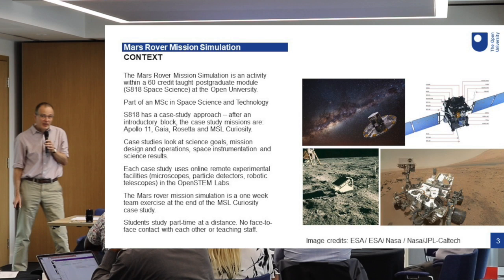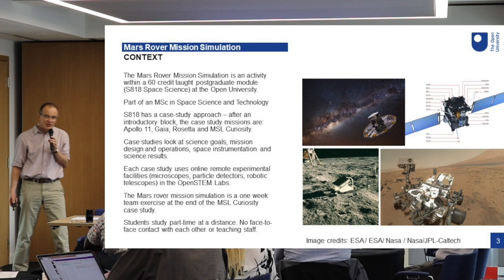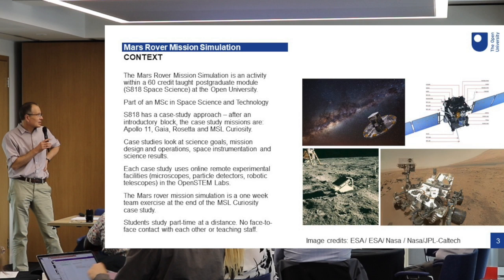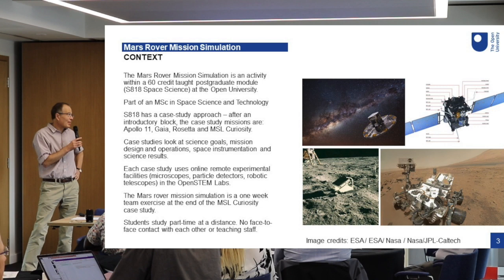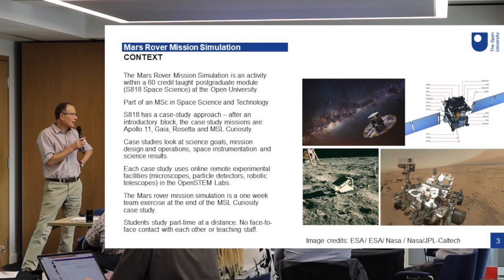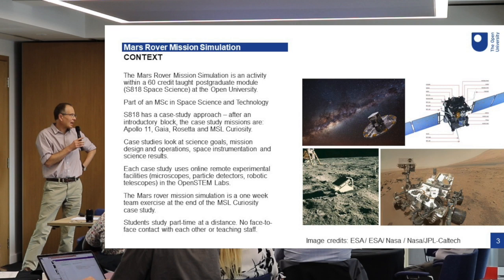Let me give you some context about why we run this activity. We have a 60 credit module on space science, which is part of an MSC in Space Science and Technology. One of the interesting things about S818, this space science module, is that it has a case study approach with an introductory block about the basics you need to know about space missions. After that, it very quickly goes into looking at four iconic missions as a way of developing students' understanding about how those missions were run — how they're designed, how the data is handled, and the science results we get out of them.